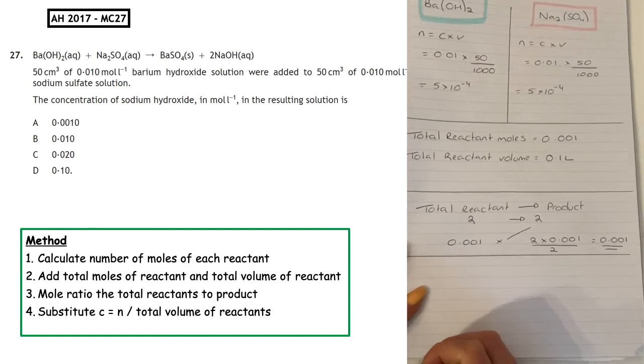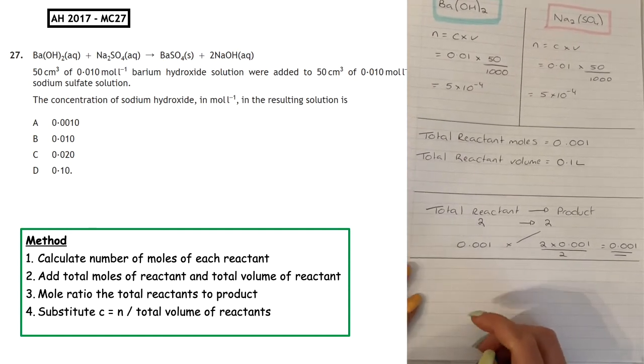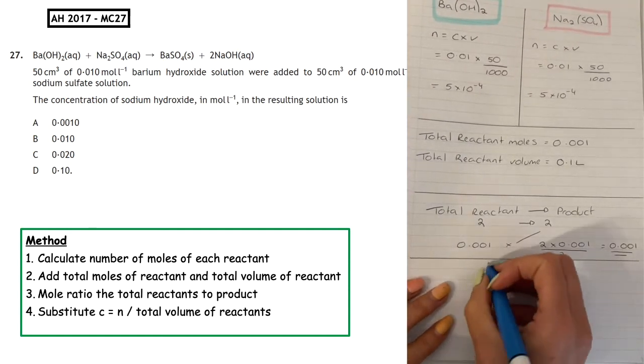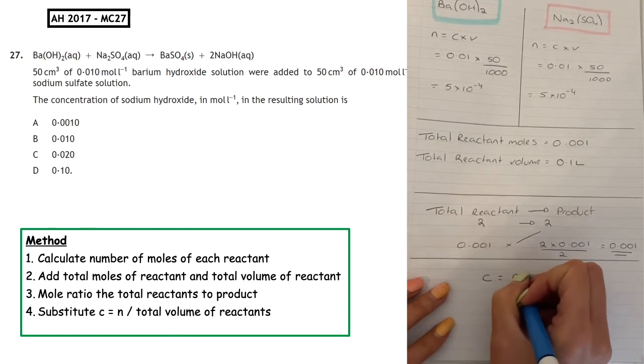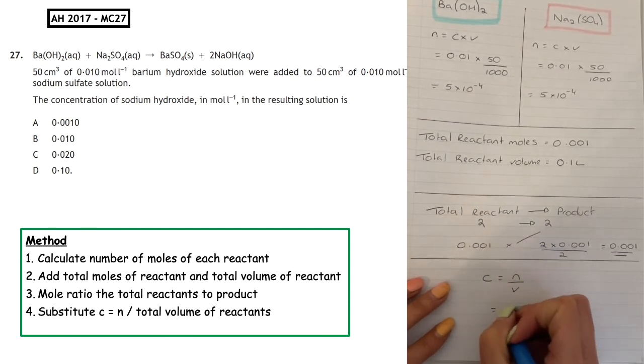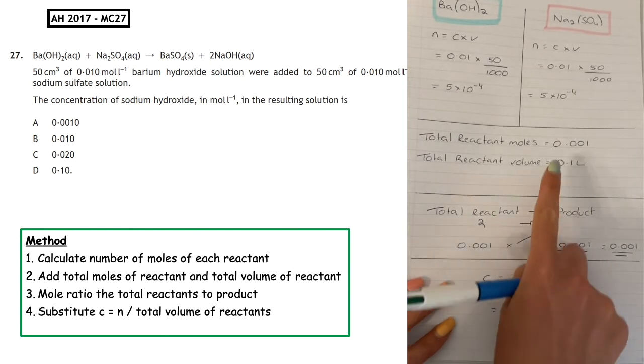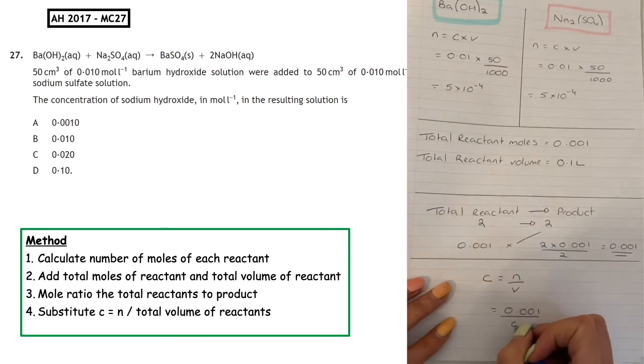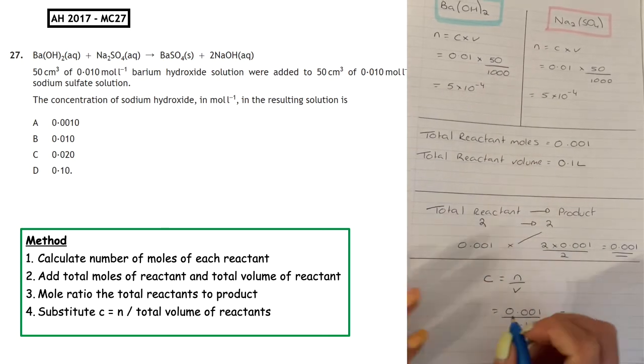To finish this off, the question wants us to calculate concentration. Concentration equals number of moles over volume. The number of moles we've calculated as 0.001, we need to do it over the total volume which is 0.1. When we put that into the calculator...